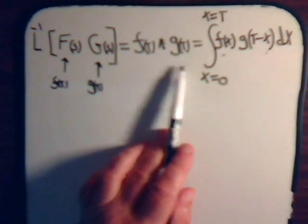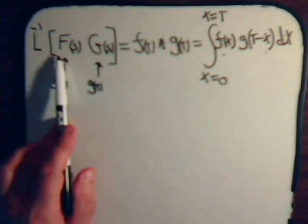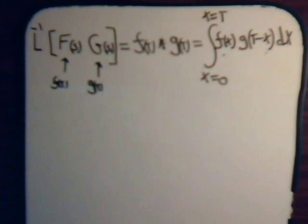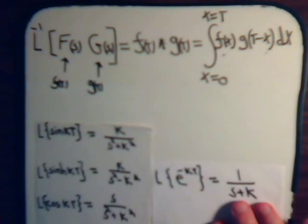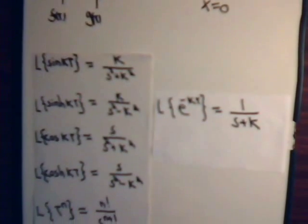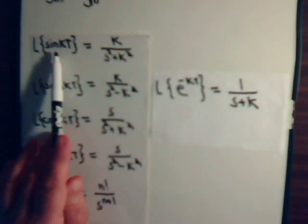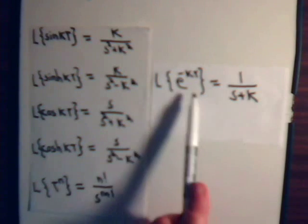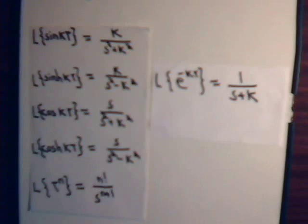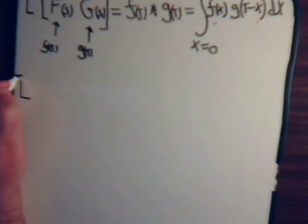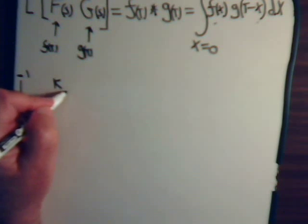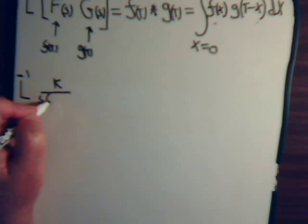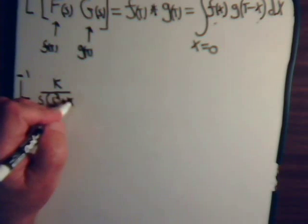So we're going to use this to solve different types of problems — we want to find the inverse Laplace transform of a particular expression. In previous videos in our series, we derived these basic equations for the sine, the hyperbolic sine, the cosine, the hyperbolic cosine, t raised to some power, and for the exponential. So we're assuming everyone is familiar with these basic equations. Suppose we want to find the inverse Laplace transform of k divided by s times (s² + k²).